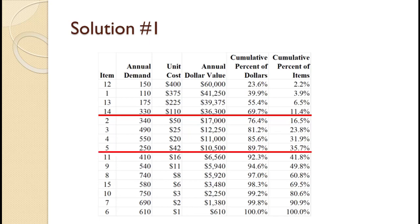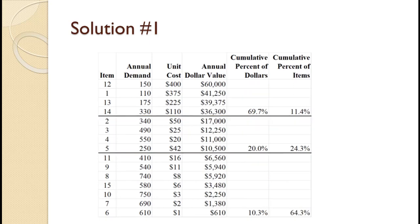The remainder of the items would be C items. As you can see in this example, A items make up 69.7% of the dollars and 11.4% of the count. B items make up 20% of the dollars and 24.3% of the count. And C items make up 10.3% of the dollars and 64.3% of the count. These values are in line with our rule of thumb. You should also note that this is somewhat subjective — we could easily justify making the line between items 4 and 5 the divider between B and C items. This subjectivity will always be the case.